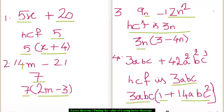So, we take 3n here and then we divide 9n by 3n to get 3 as the quotient, and we divide 12n square by 3n to get 4n as the quotient. So, 3n times 3 minus 4n are the factors of 9n minus 12n square.